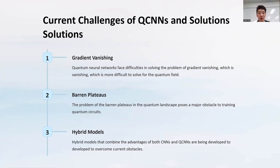There are some current challenges with QCNNs. One of the biggest is gradient vanishing — in traditional neural networks there are ways to handle this, but when you move to quantum mechanics it becomes more difficult because the way it works is totally different. There are also problems like limited learning capacity due to the current stage of quantum computing technology. To overcome these problems, the scientific community is still exploring hybrid models that combine advantages of both CNNs and QCNNs, while we wait for quantum computing hardware and algorithms to be improved in the future.